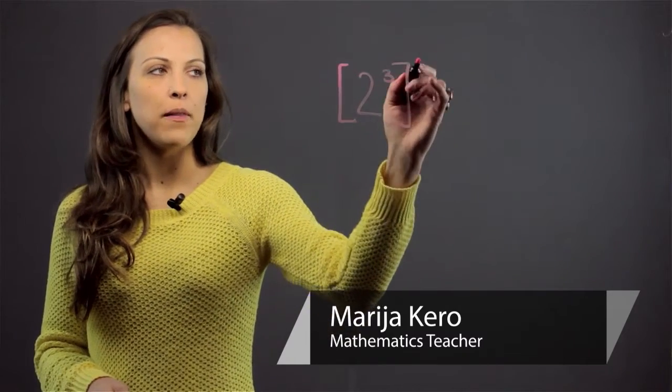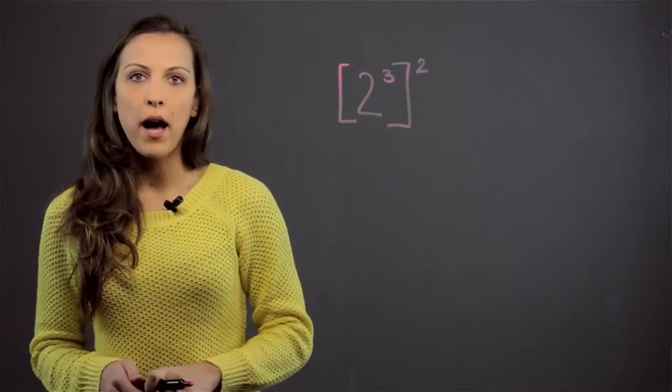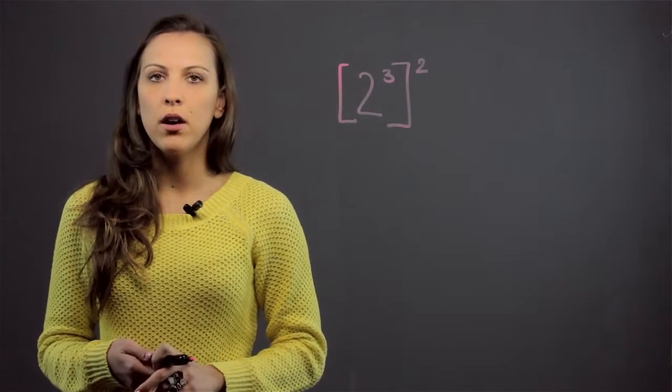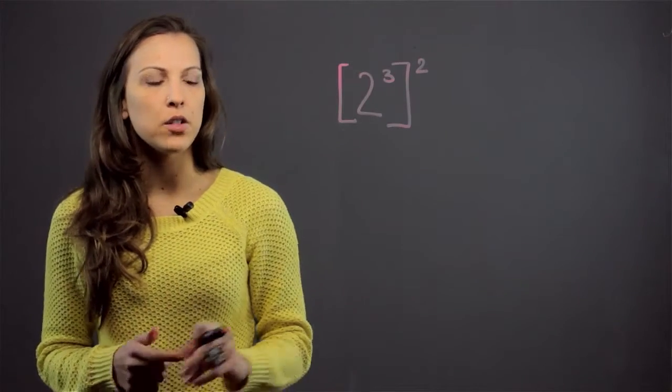So when you're using brackets or parentheses and you have an exponent inside and then outside, we're going to use what's called the power-to-power law. And the power-to-power law says that you have to multiply the exponent by the other exponent that it's being raised to.